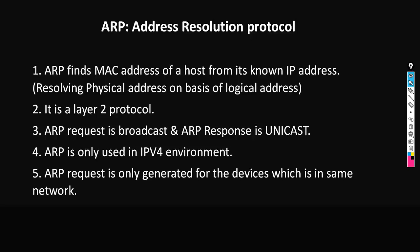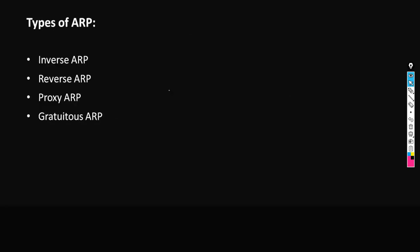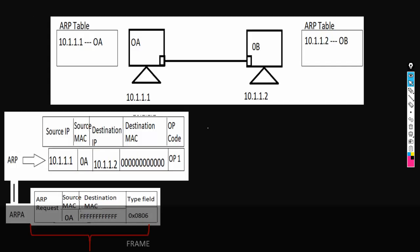Moving ahead, there are four types of ARP: Inverse ARP, Reverse ARP, Proxy ARP, and Gratuitous ARP. We will now understand the process of how ARP works.